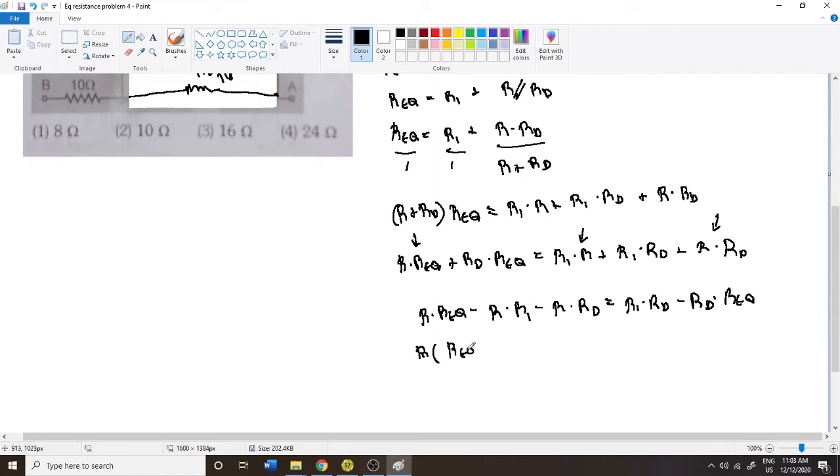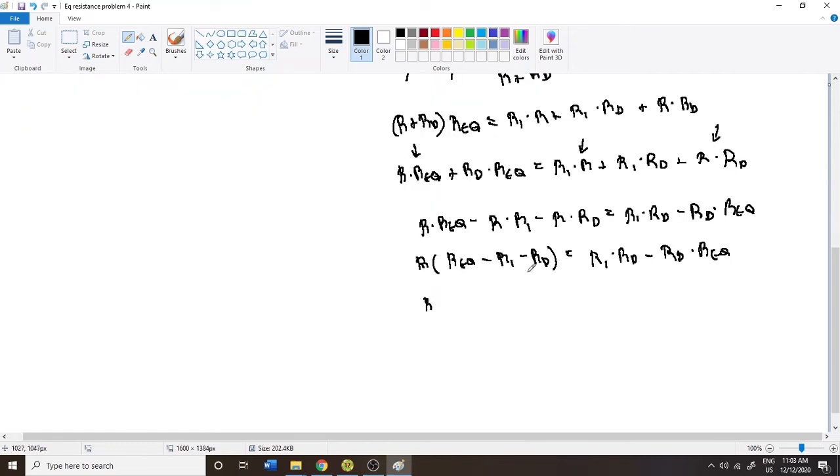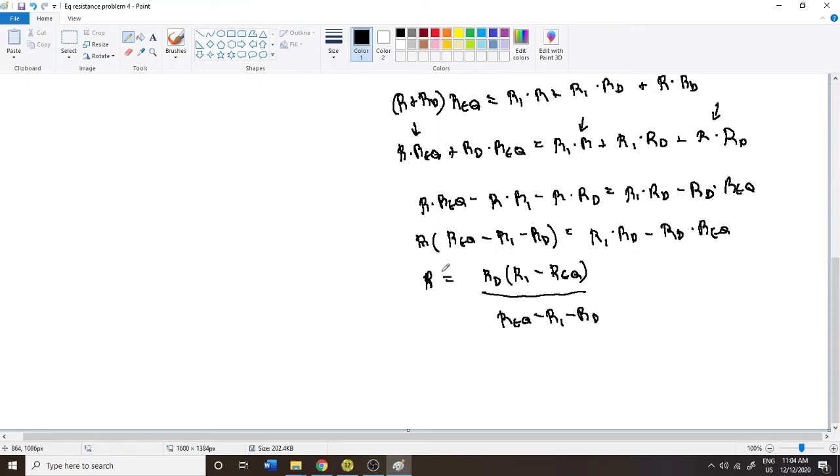Next thing I'm going to factor. So R times REQ minus R1 minus RD is equal to R1 dot RD minus RD dot REQ. And I can factor this RD since they both have the term. So now I'm going to divide each side by this term. R is equal to RD times R1 minus RD dot REQ divided by REQ minus R1 minus RD. And that's R. That's what R is. So now if we evaluate this for each of the values that we know, we should be able to calculate the resistance. Hopefully it comes out the way that we expect.